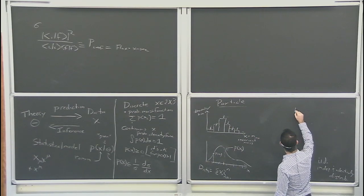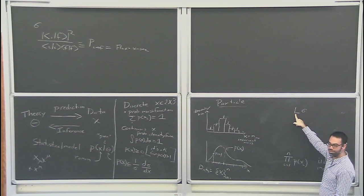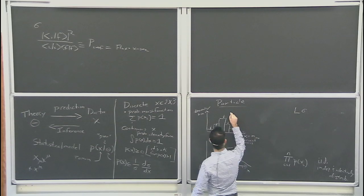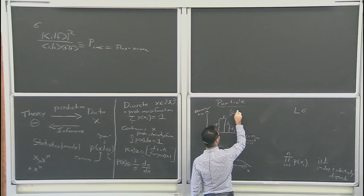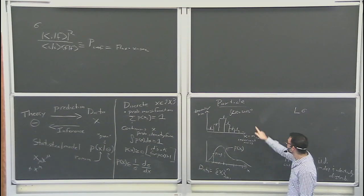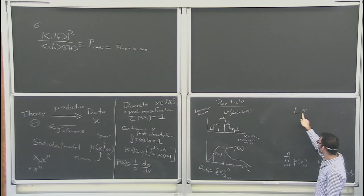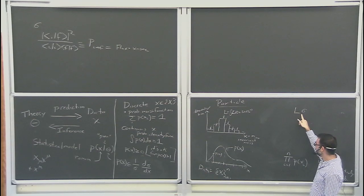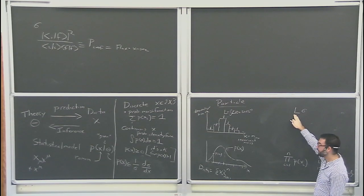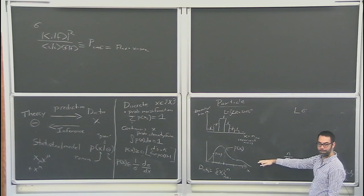I'll write it as L times cross section σ. This has units of area; L is the time-integrated luminosity, with units of one over area. In all the plots you see, you'd see something like the integral of L dt equals 30 inverse femtobarns or something on a plot. So this total integrated luminosity times a cross section gives you the expected number of events.